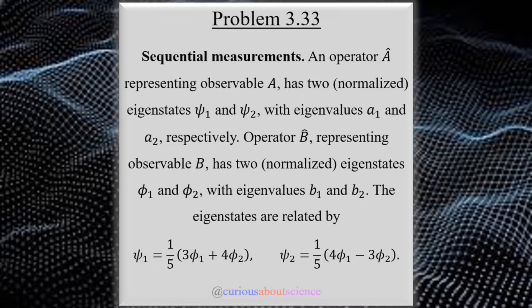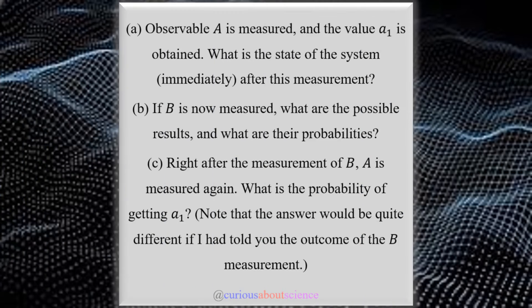With this context though, let's go ahead and see what we actually need to do. So, for three parts here, we have observable A is measured, and the value A1 is obtained. What is the state of the system immediately after this measurement? Okay, emphasis on the word immediately there.